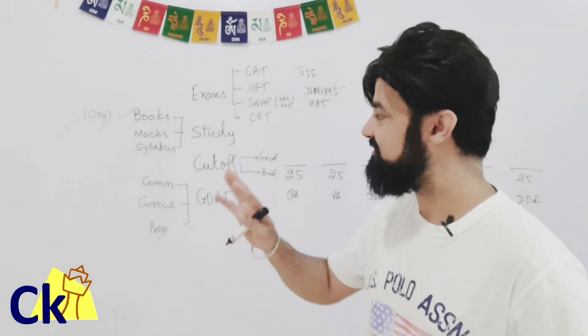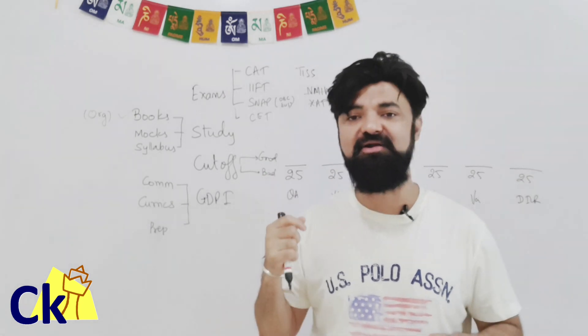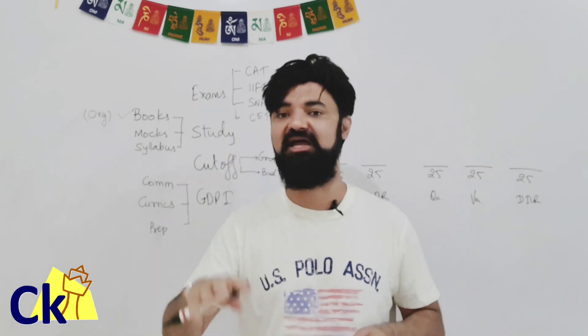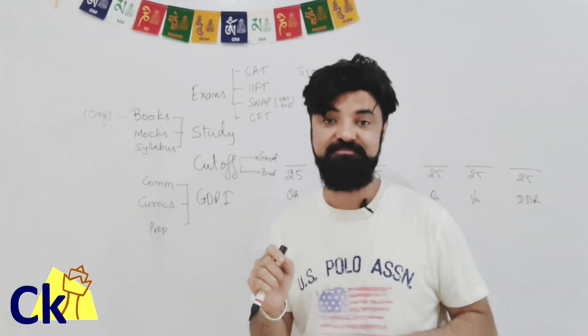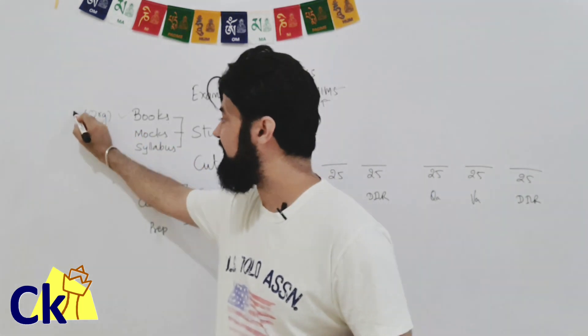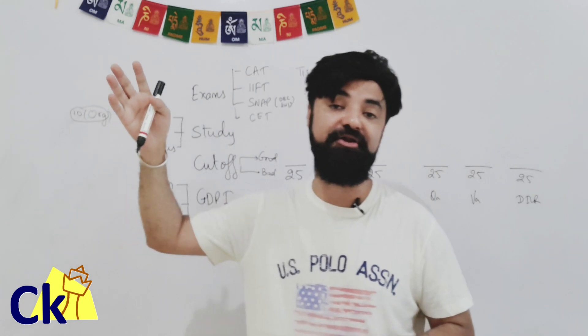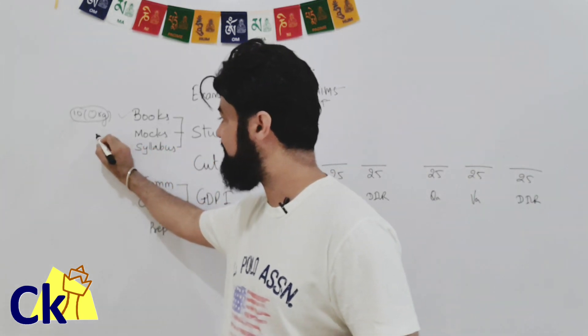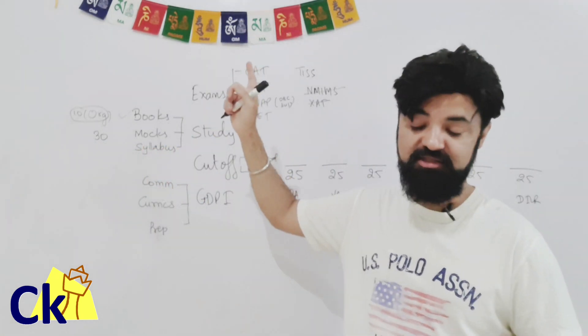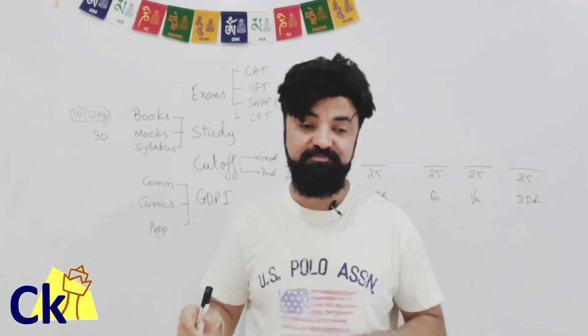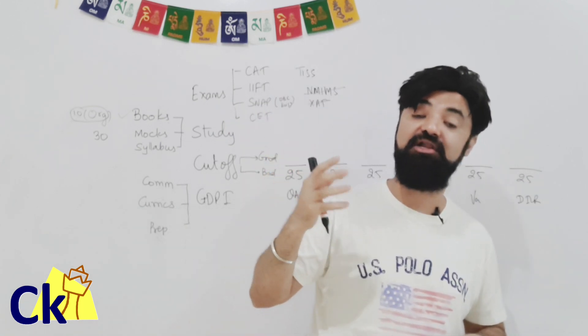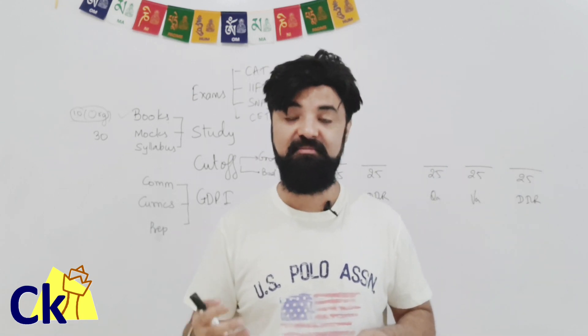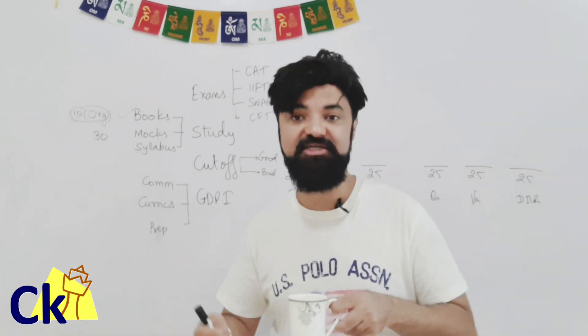Number two is mocks. Being an Indian student, I want to quantify things. So I'm telling you complete 10 orange books. I can promise you the IIM call. Mocks, complete 30 mocks. Now, this girl who got the IIM Ahmedabad call gave less than 10 mocks. But she was lucky enough, she was a SC category, she was lucky enough to get the call even with one month of preparation and less than 10 mocks. But some of us might not be that lucky. We need to work extra hard.